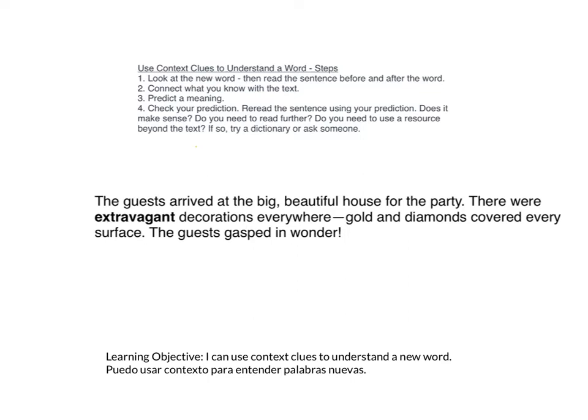Step two: connect what you know with the text. A big, beautiful house — that sounds like a place a rich person might live. They're getting people together for a party. There's this word we don't know, extravagant. And then we have decorations like gold and diamonds on every surface, and the guests are gasping in wonder when they see these extravagant decorations. So I'm connecting gold and diamonds and a big, beautiful house with a rich person. Extravagant would describe something that's maybe expensive or very nice.